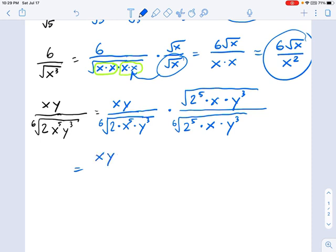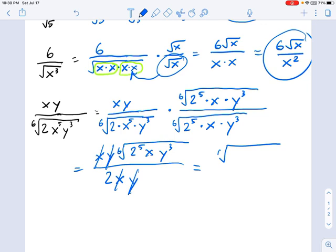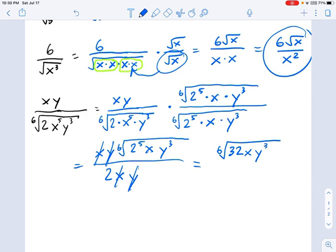This becomes xy times 2 to the fifth xy cubed in a sixth root. I forgot that earlier. Divided by the sixth root of 2 to the sixth power, that's just 2. The sixth root of x to the sixth power is x. The sixth root of y to the sixth power is y. And now we can cross some things out. That's nice. So, the x and the y cross out, and we get this. We get the sixth root of 2 to the fifth is 32, so I'll just write that. So, 32xy cubed, all divided by 2. And that is the form of that ugly, ugly final answer. So, let's do this.